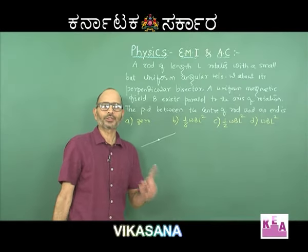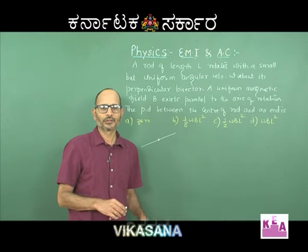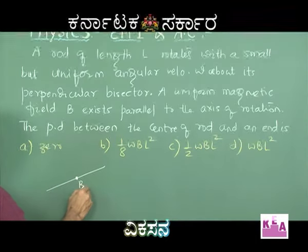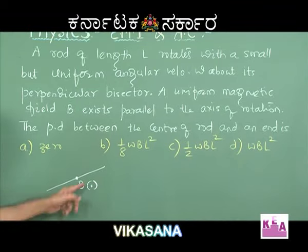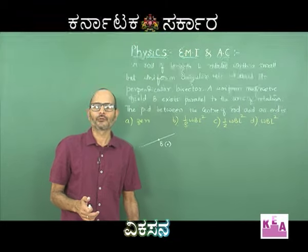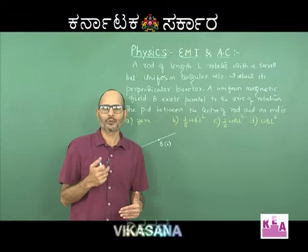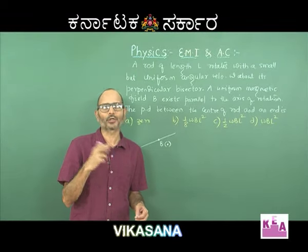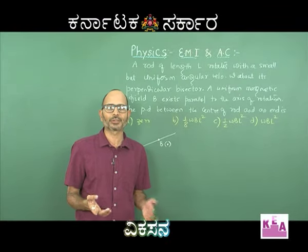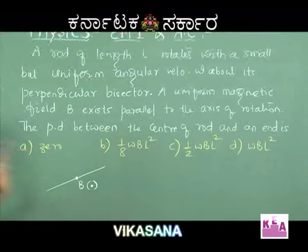He has not told you whether the magnetic field is into the board or out of the board. No problem — let us consider the magnetic field to be out of the board, represented by a dot. Whenever something is perpendicular to the paper, we represent it by either a dot (coming out) or a cross (going into the paper). So here the magnetic field is coming out of the board.